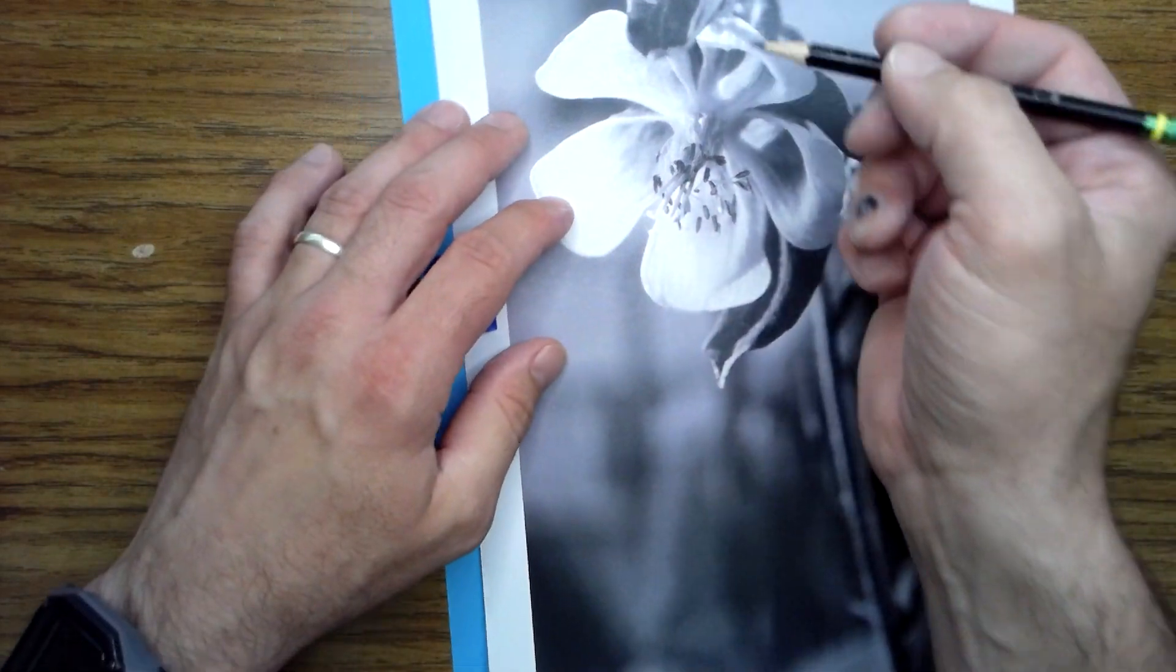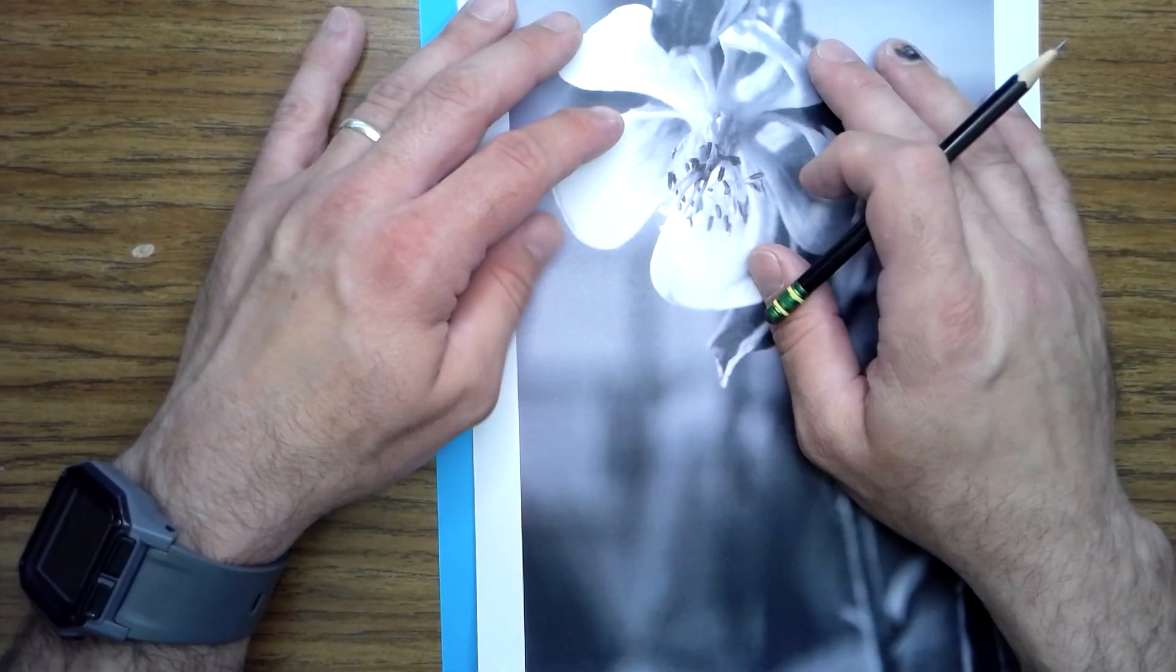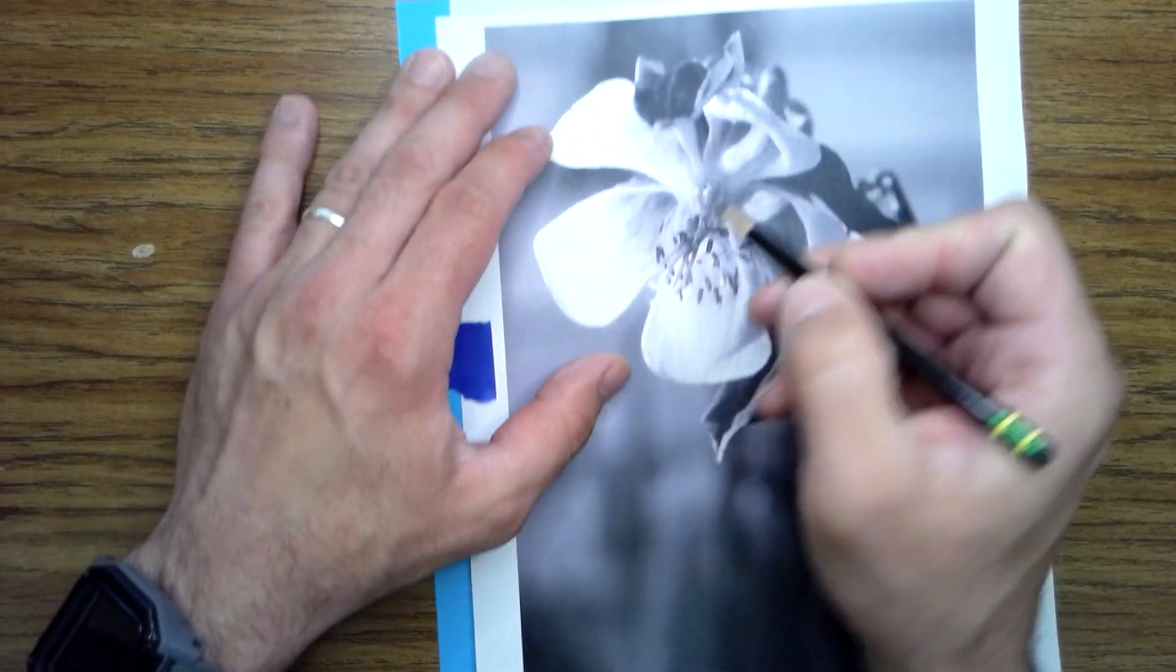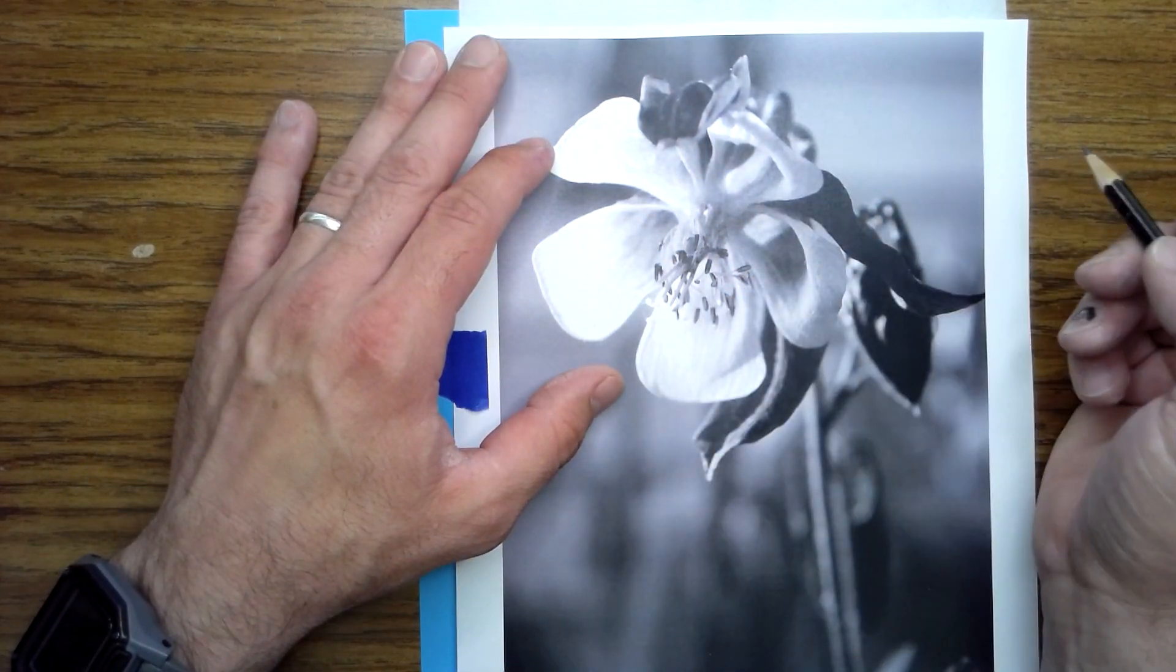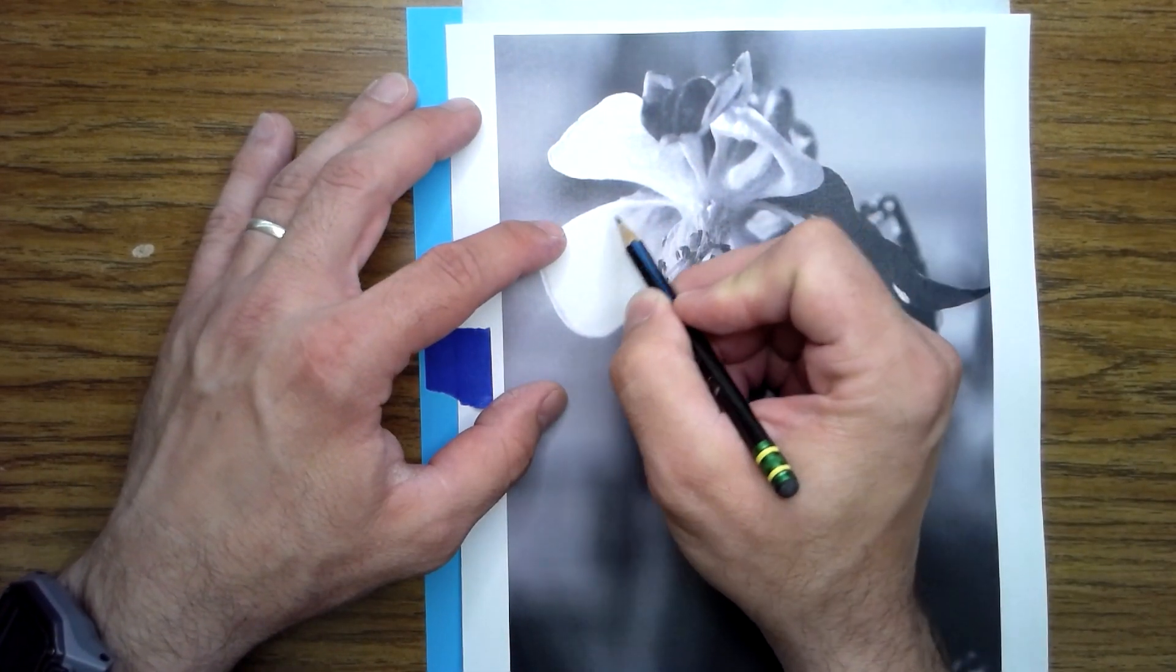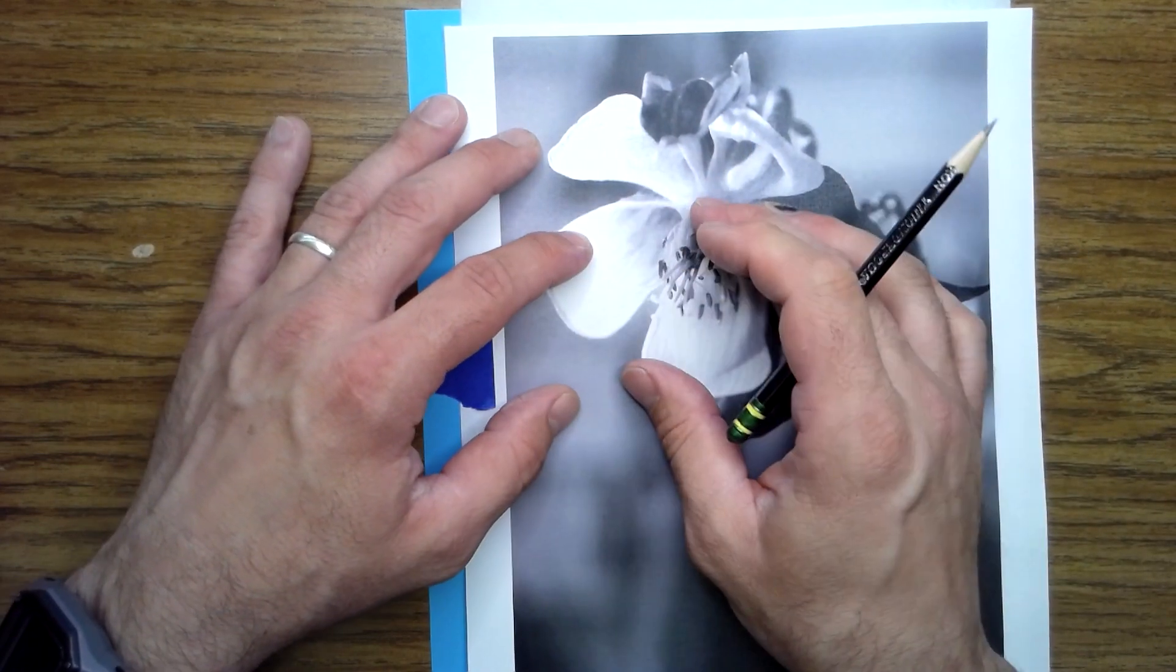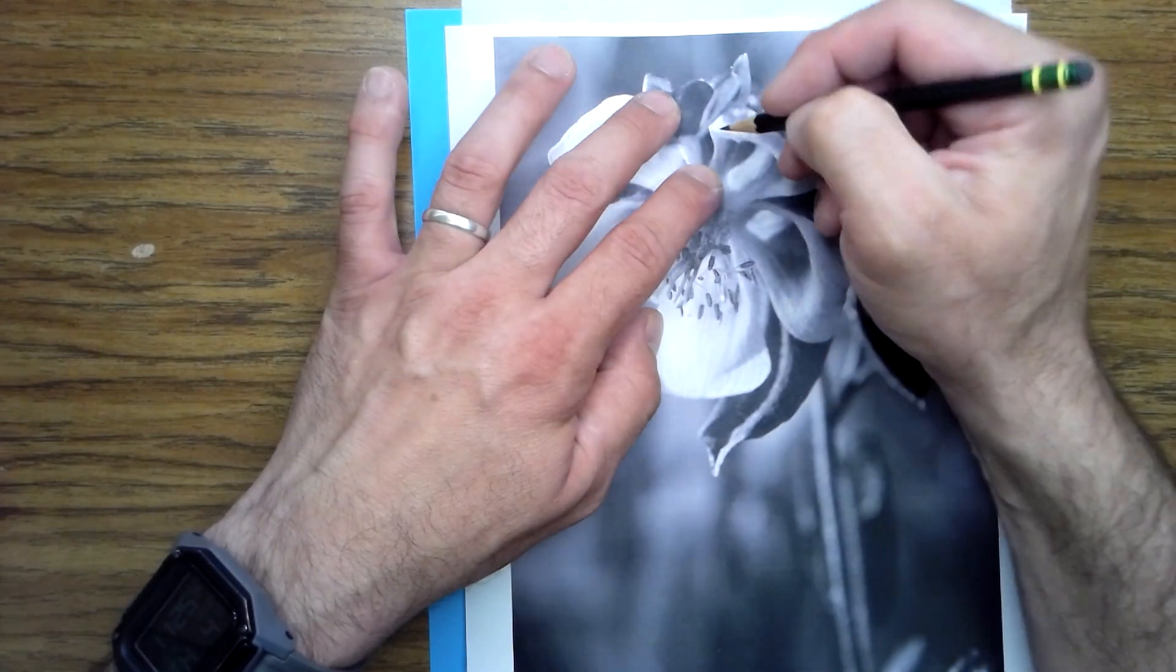And then I'm going to just transfer the contour lines. Now all of this stuff in here, those values in that area of the flower, I don't want to draw those in. I can reference where those edges of separation are, but I just really want to trace strong contrasting edges of separation.